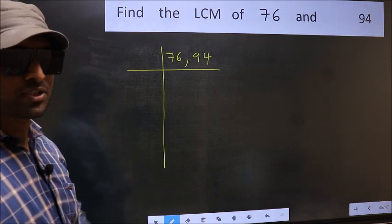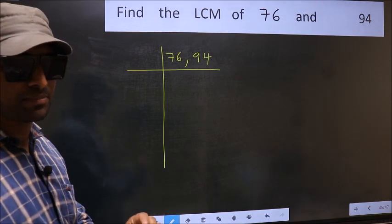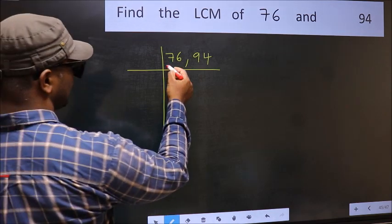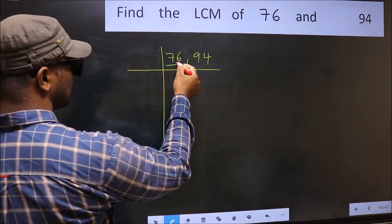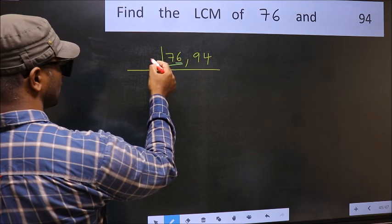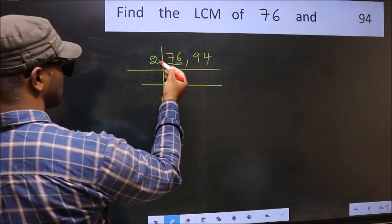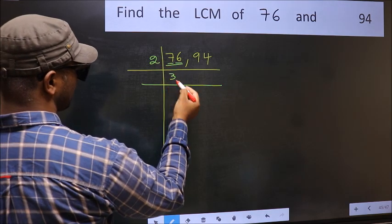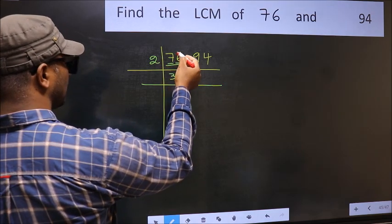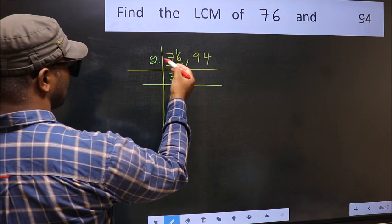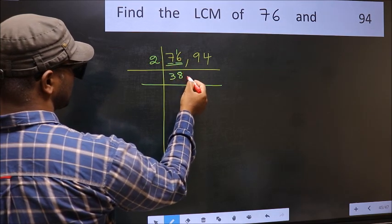Now you should focus on the first number, which is 76 here. In this number, last digit 6 is even, so take 2. First number 7. A number close to 7 in 2 table is 2 times 3, 6. 7 minus 6, 1, 1 carried forward 16. When do we get 16 in 2 table? 2 times 8, 16.